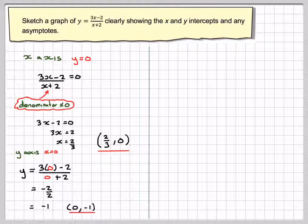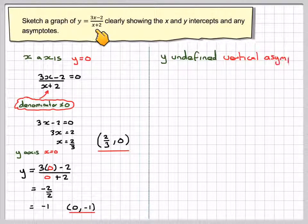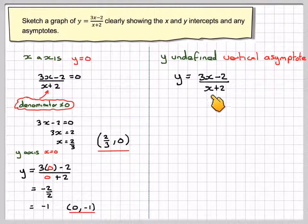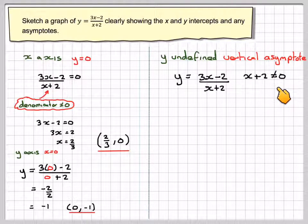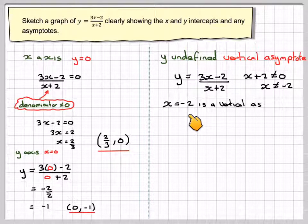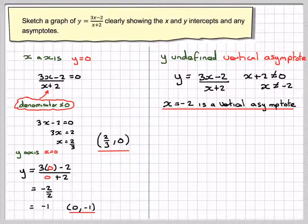Now we have to find the asymptotes. We'll do the y undefined first. There's a value of x that we cannot put into this function. We cannot put in minus 2, because x plus 2, the denominator, cannot equal 0. Therefore x cannot equal minus 2, and the line x equals minus 2 is a vertical asymptote.